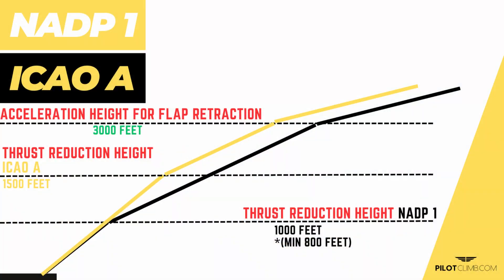The second family — Noise Abatement Departure Procedure No. 1 and ICAO Alpha — prioritizes noise reduction in the initial part of the take-off, so you produce less noise at the beginning of the climb.